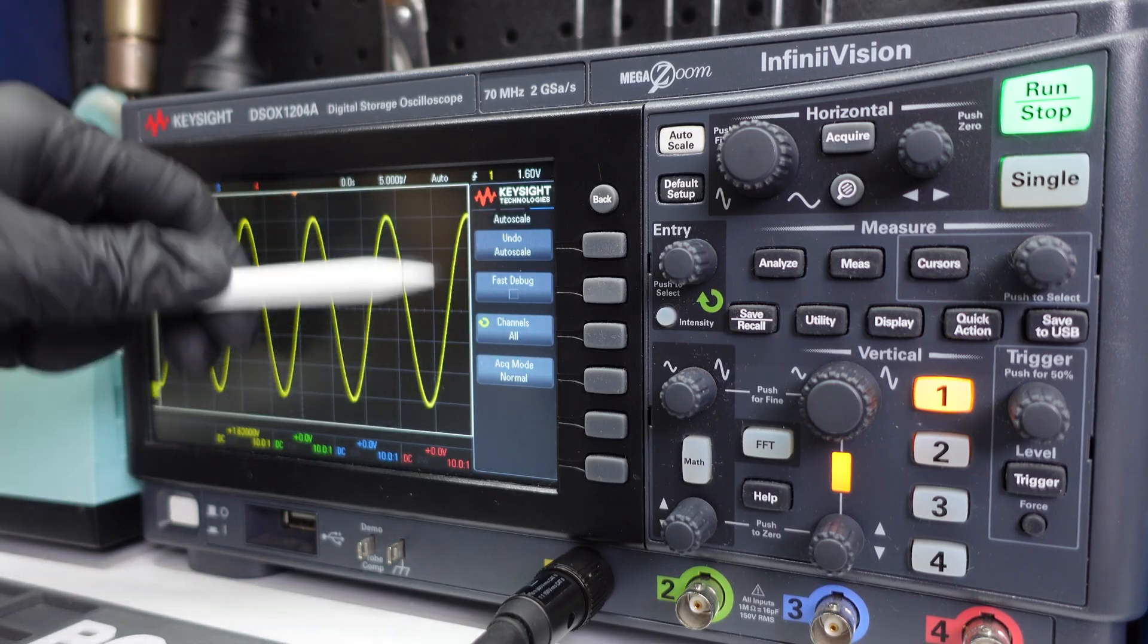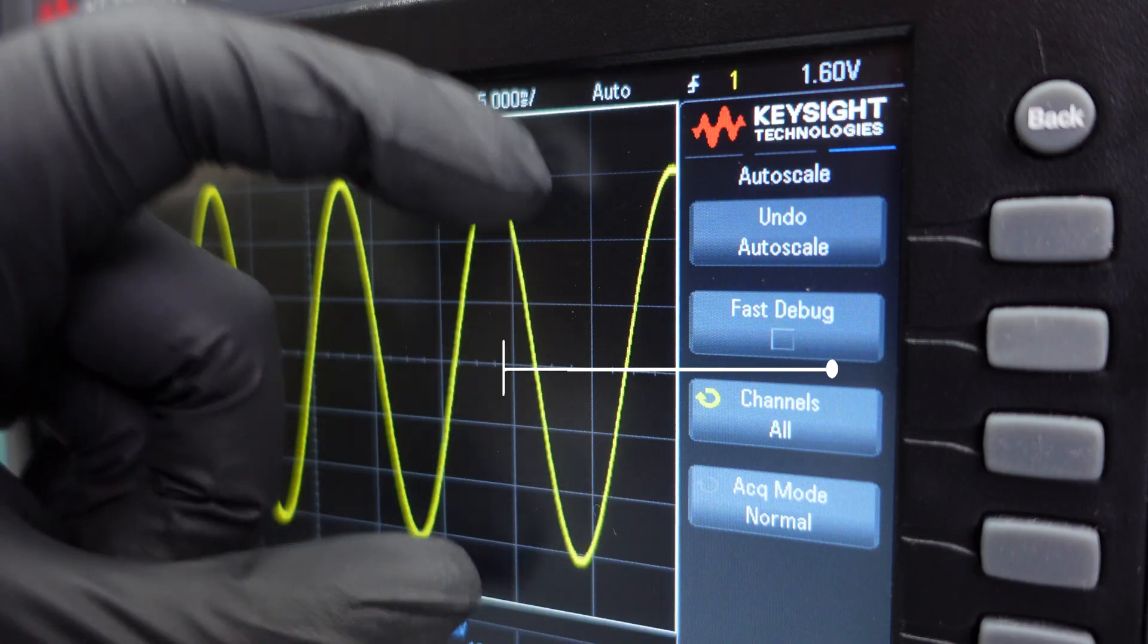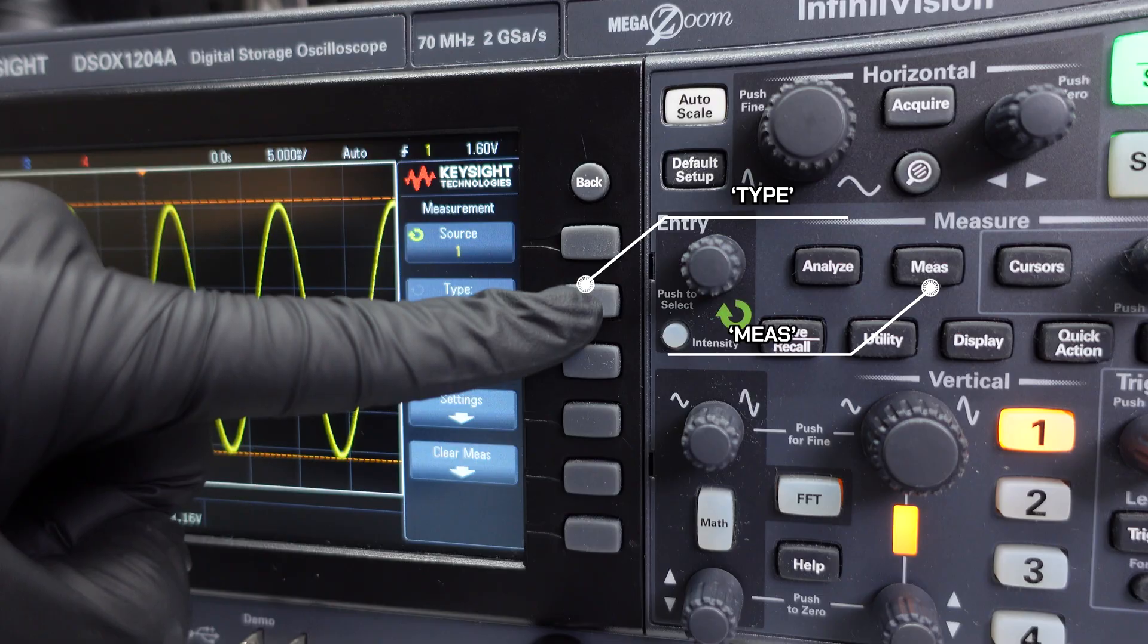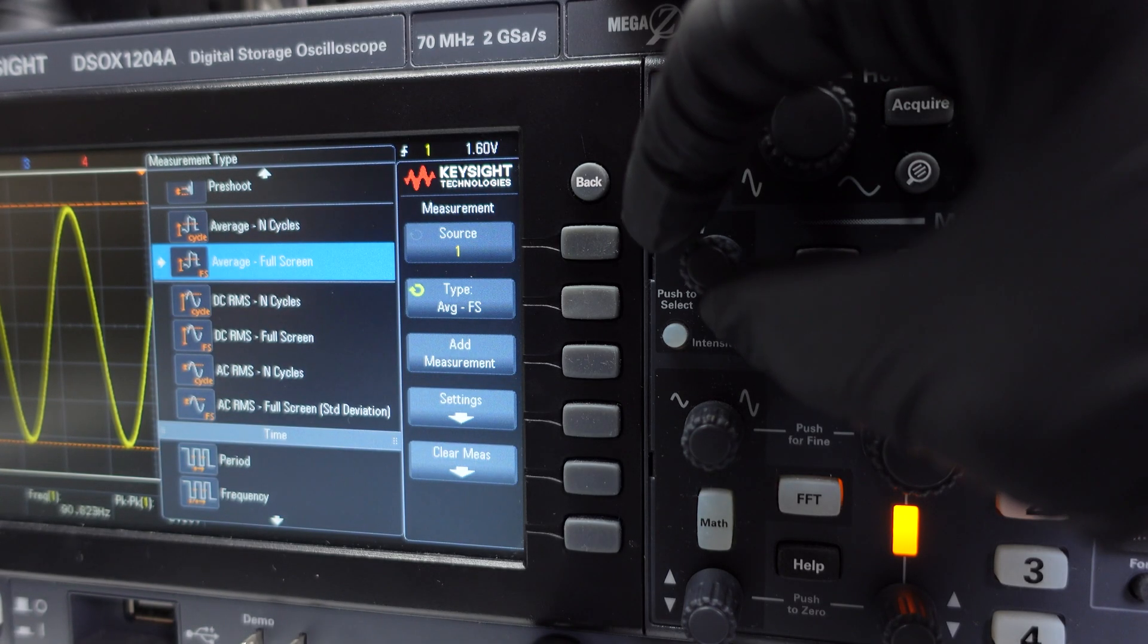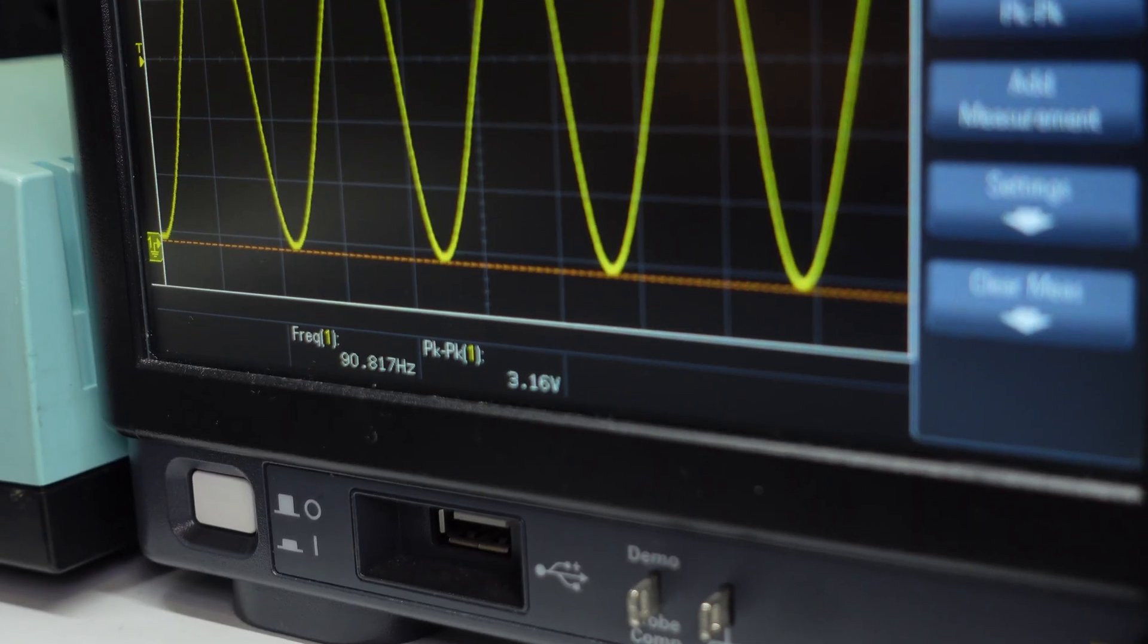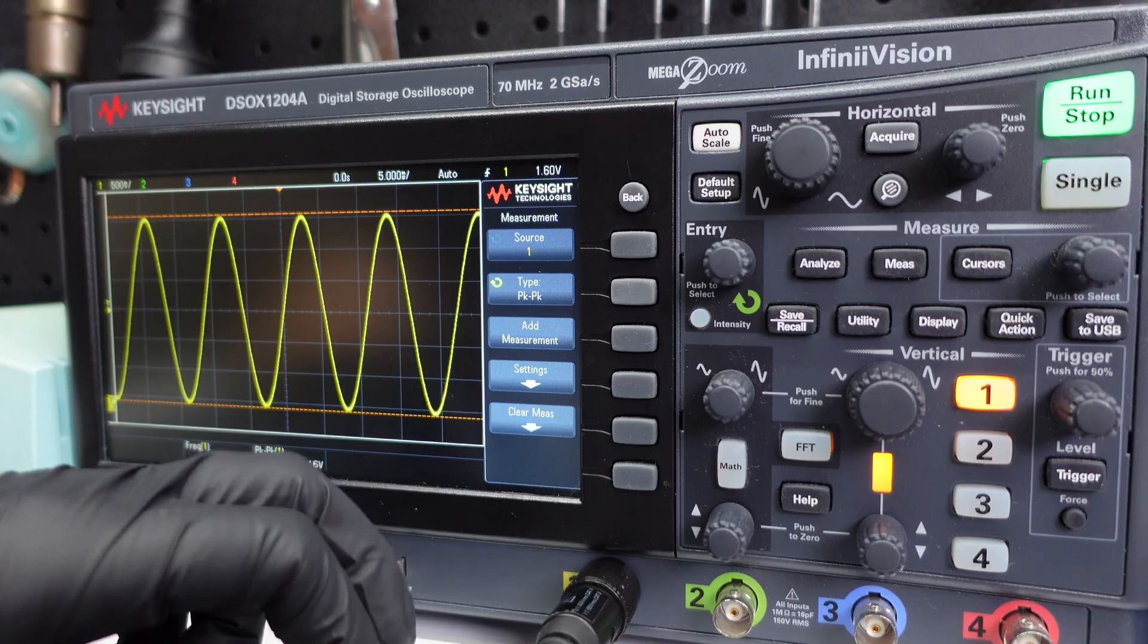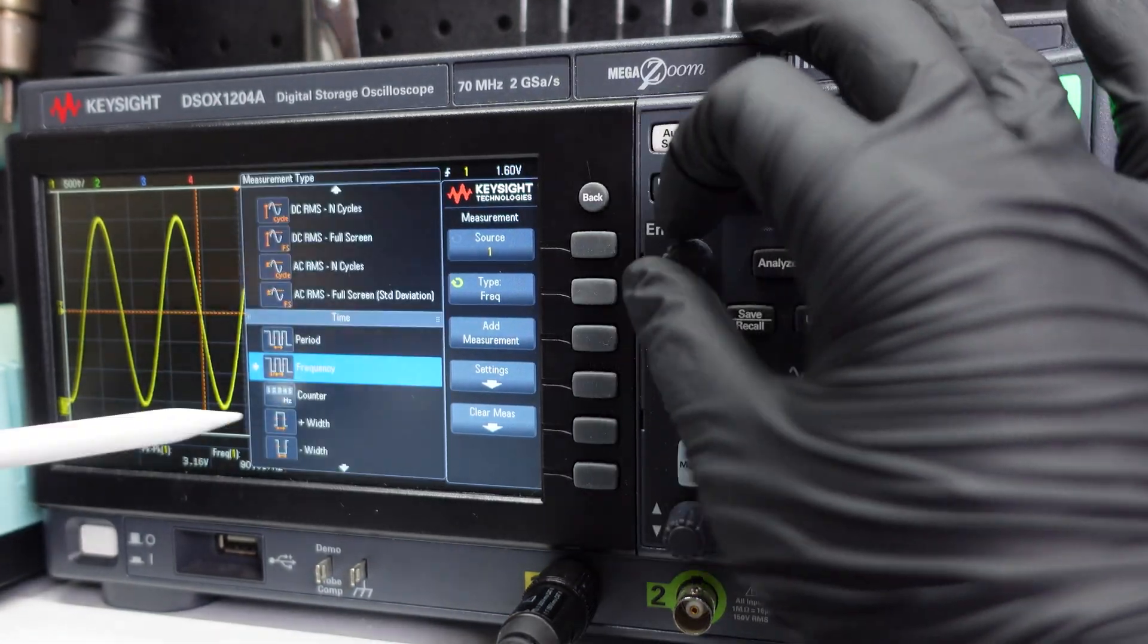Now that the waveform is stable, let's analyze it using the oscilloscope's built-in measurement tools. First, let's measure the peak-to-peak voltage. So hit meas, type, and use the main control knob with the entry label to change the type to peak-to-peak voltage. And then press the knob to select and then hit add measurement. Now you'll see the peak-to-peak voltage being displayed on the bottom here.